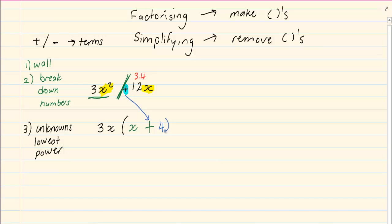To double check your answer you can simplify by saying 3x times x is equal to 3x squared and then 3x times positive 4 is equal to 12x.